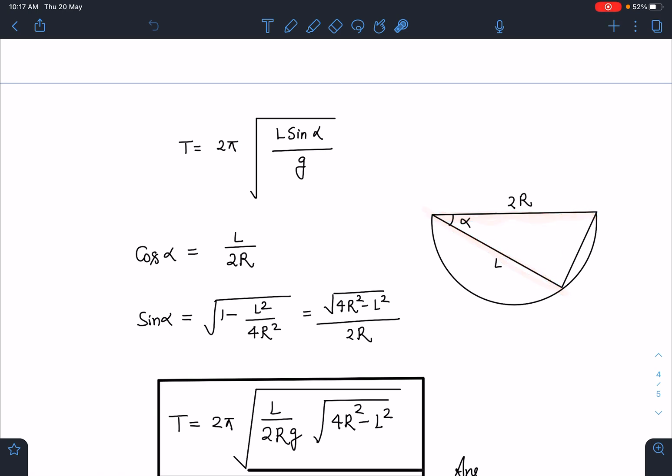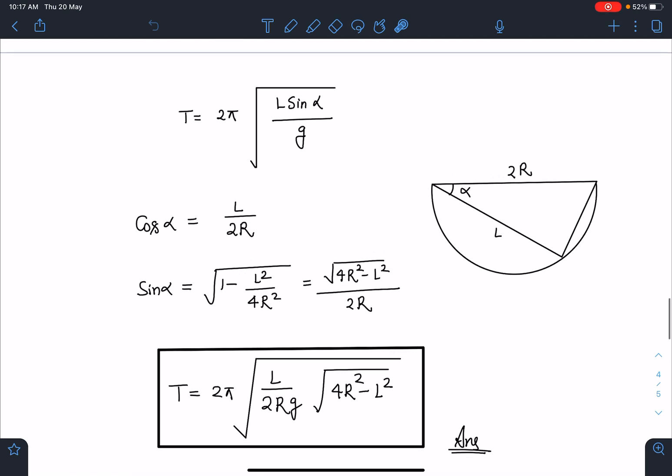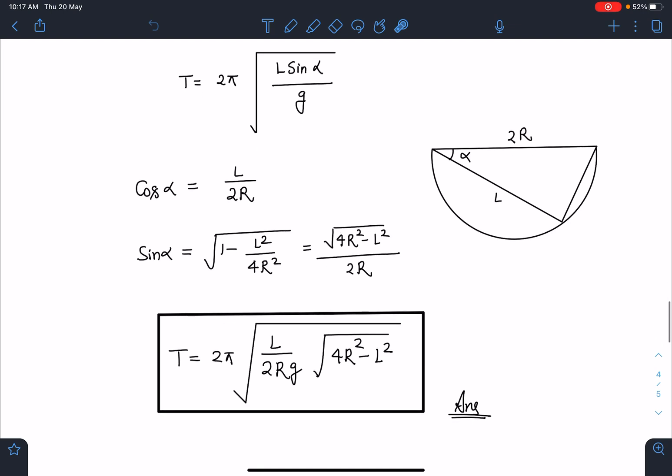We can calculate sin α = √(1 - cos²α). If I substitute the values, I get sin α = √(4R² - L²)/(2R). I can write the time period as T = 2π√(L sin α / g). If I substitute the value of sin α, I get the answer as T = 2π√[L√(4R² - L²)/(2Rg)]. This is the final answer.